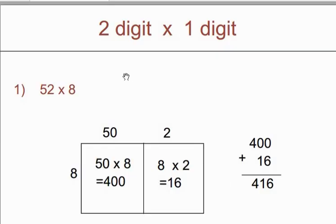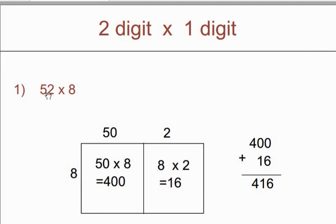First of all, we will see multiplication of 2-digit by 1-digit number. Our first example is 52 multiplied by 8. 52 is our 2-digit number and 8 is our 1-digit number. So we need 2 boxes wide and 1 box high. For 52 we write 50 plus 2, and 8 is our single number so we write it as it is.